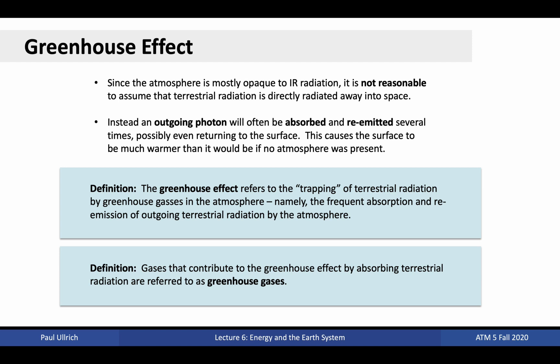Fortunately, the atmosphere is actually mostly opaque to infrared radiation, so it is not reasonable to assume that surface emission goes straight to space. Instead, an outgoing photon will often be absorbed and re-emitted several times, possibly even returning to the surface. While most incoming radiation has no problem passing through the atmosphere, outgoing radiation faces many obstacles in the form of greenhouse gases on its way out. Thus, we have the greenhouse effect, the trapping of terrestrial radiation by greenhouse gases in the atmosphere. Namely, frequent absorption and re-emission of outgoing terrestrial radiation by the atmosphere.